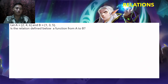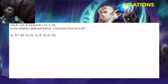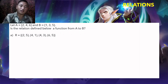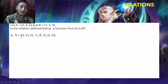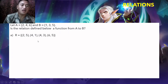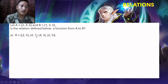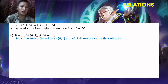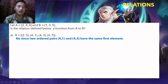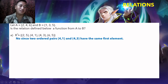Example: Let A = {2, 4, 6} and B = {1, 3, 5}. Is the relation R = {(2,5), (4,1), (4,3), (6,5)} a function from A to B? Condition 1 is satisfied since 2, 4, and 6 each have a pair. But condition 2 fails: (4,1) and (4,3) have the same first element 4, but 1 ≠ 3. Therefore R is not a function.